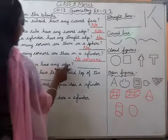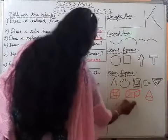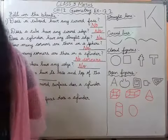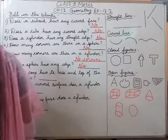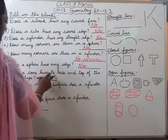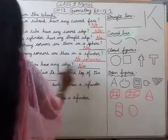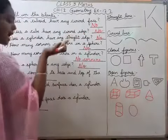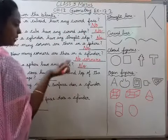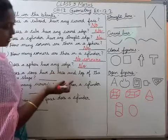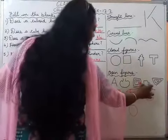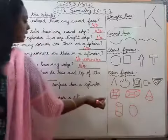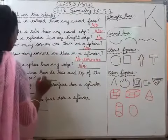Does a sphere have any edge? Sphere mein koi edge nahi hai. The answer is no. Does a cone have its base and top of the same shape? In a cone, the upper portion and the lower base are of different shapes — the top is a sharp end and the base is different. So they are not of the same shape. The answer is no.